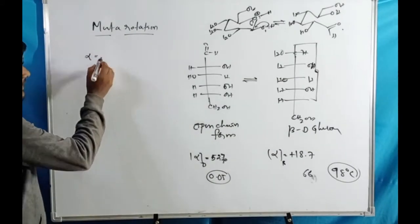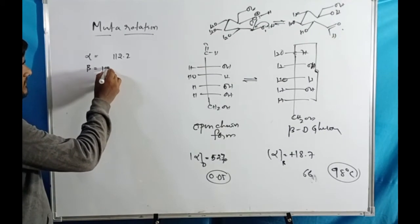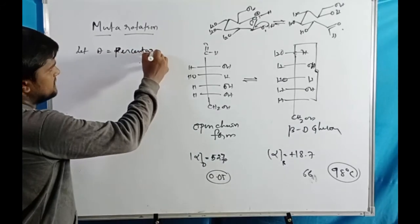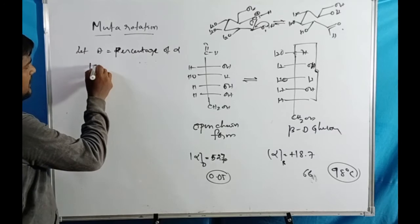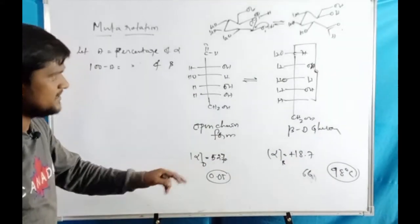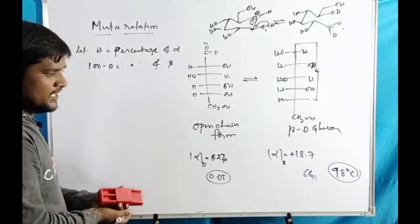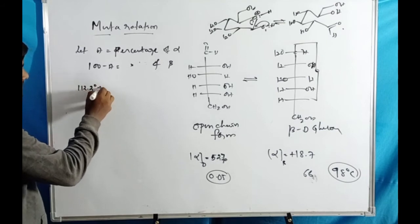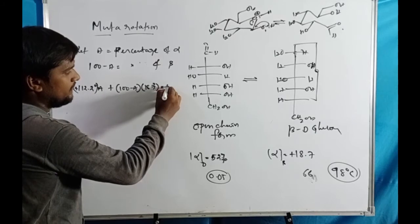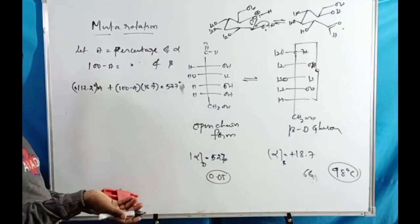Let 'a' be the percentage of the alpha isomer and (100 − a) be the percentage of the beta isomer. The alpha isomer specific rotation is +112.2° and the beta isomer is +18.7°. Since both are in equilibrium at the specific rotation of 52.7°, we set up the equation: 112.2(a) + 18.7(100 − a) = 52.7 × 100.